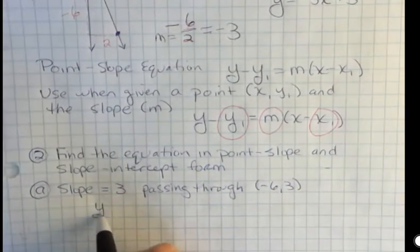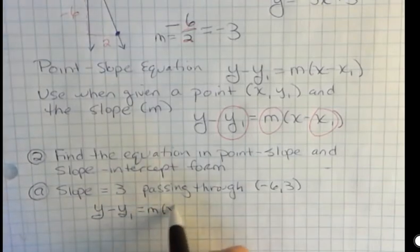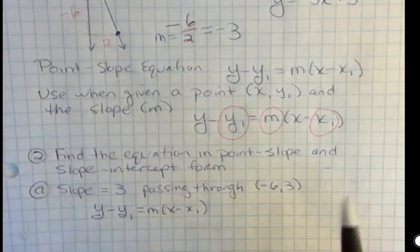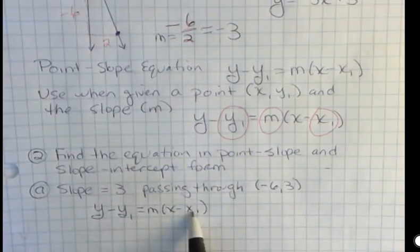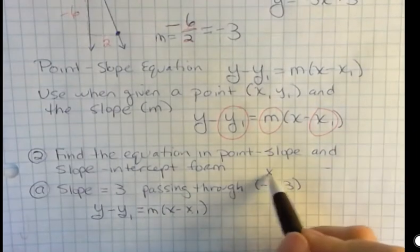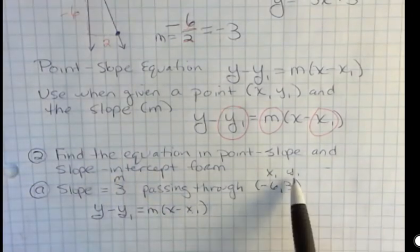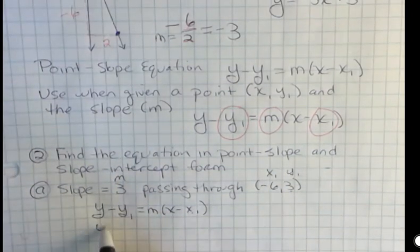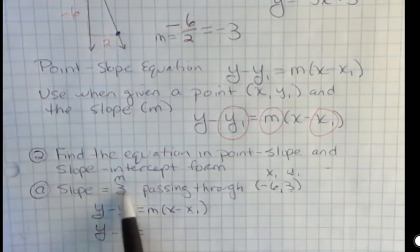The point-slope equation is y minus y sub one is m times x minus x sub one. So I'm going to replace those three things that I said we were going to replace. So the y is three. This is your x sub one and this is your y sub one and this is your m. So y sub one is three. So I'm going to say y minus three and then m. Well, m is three.